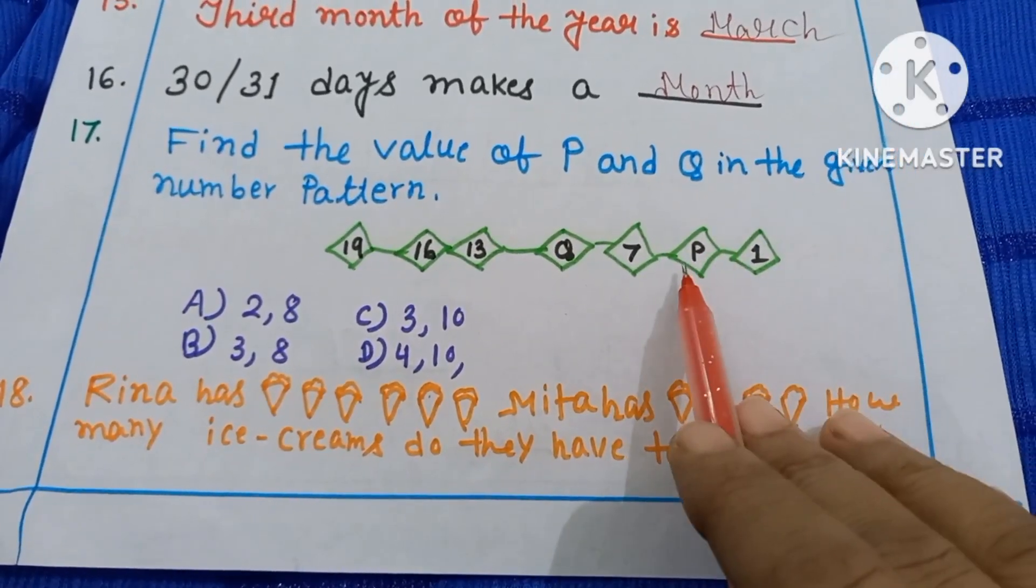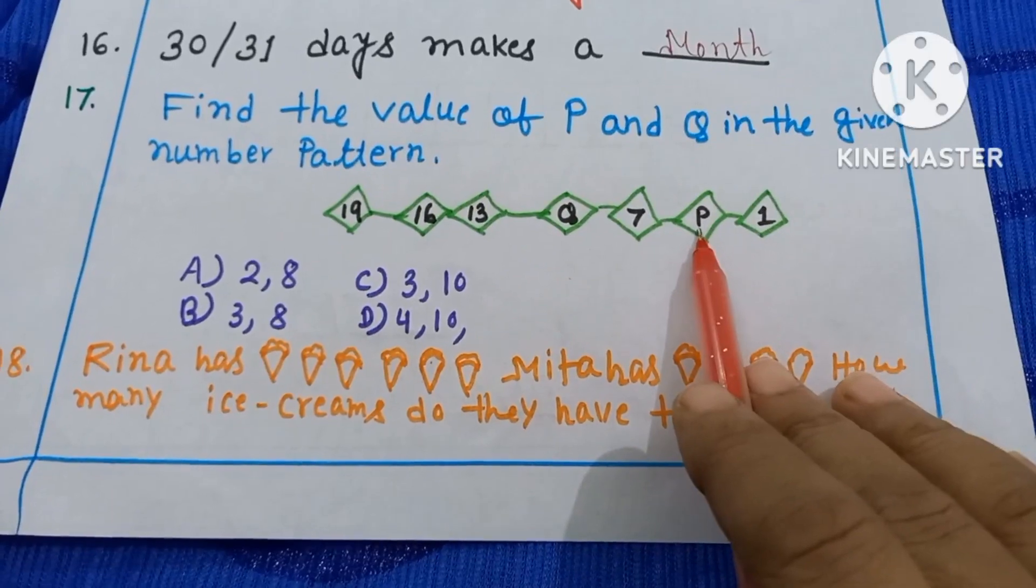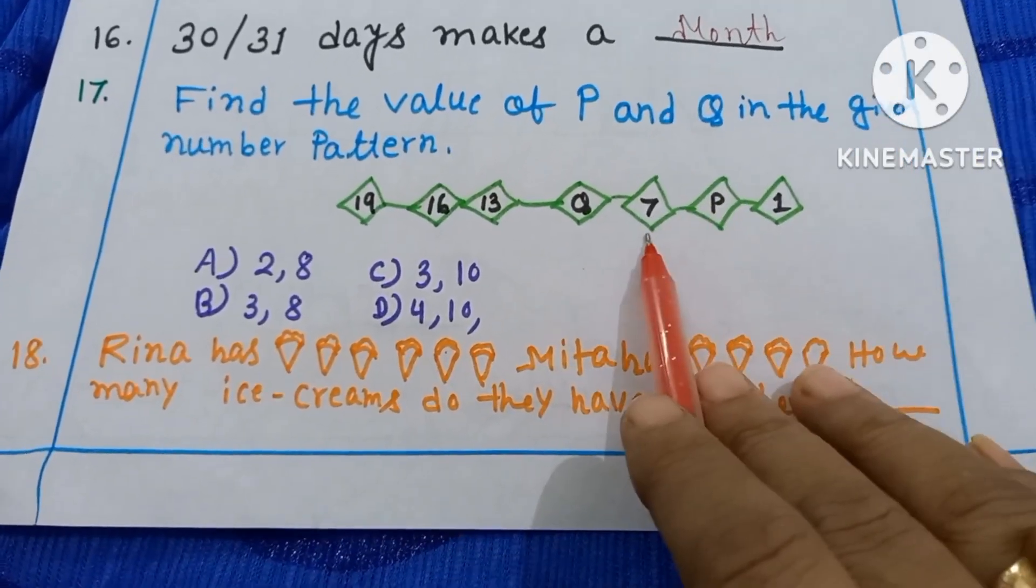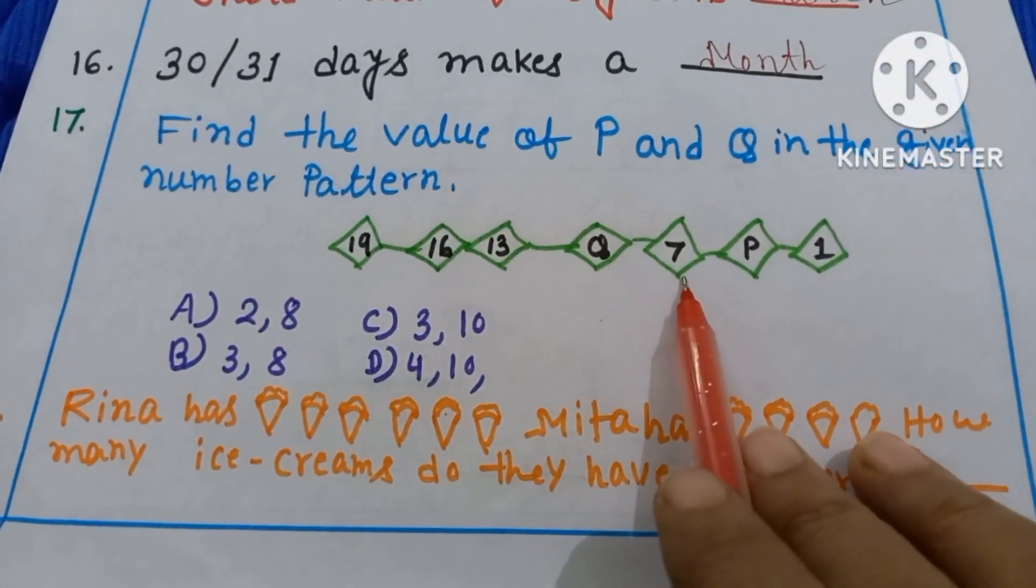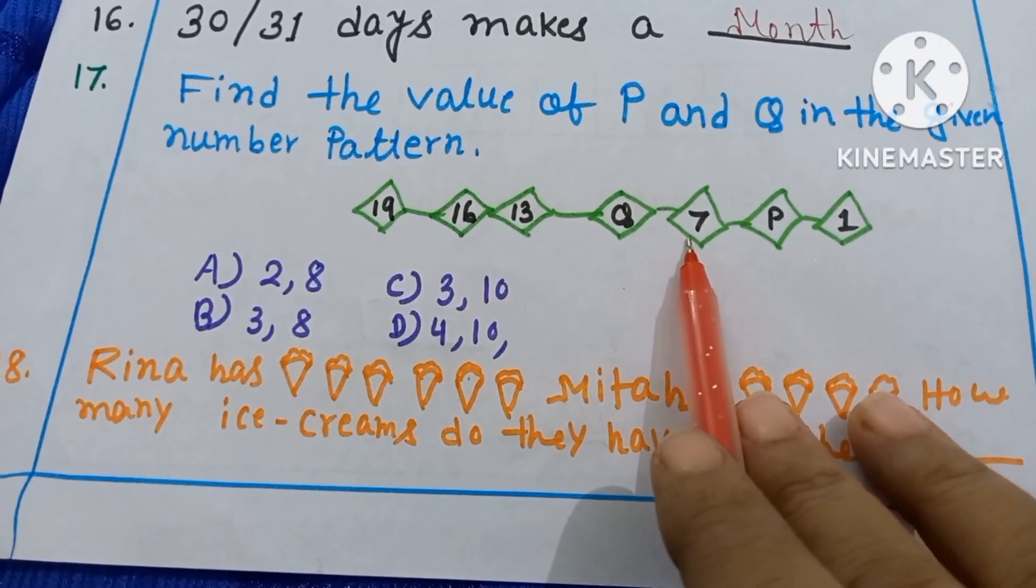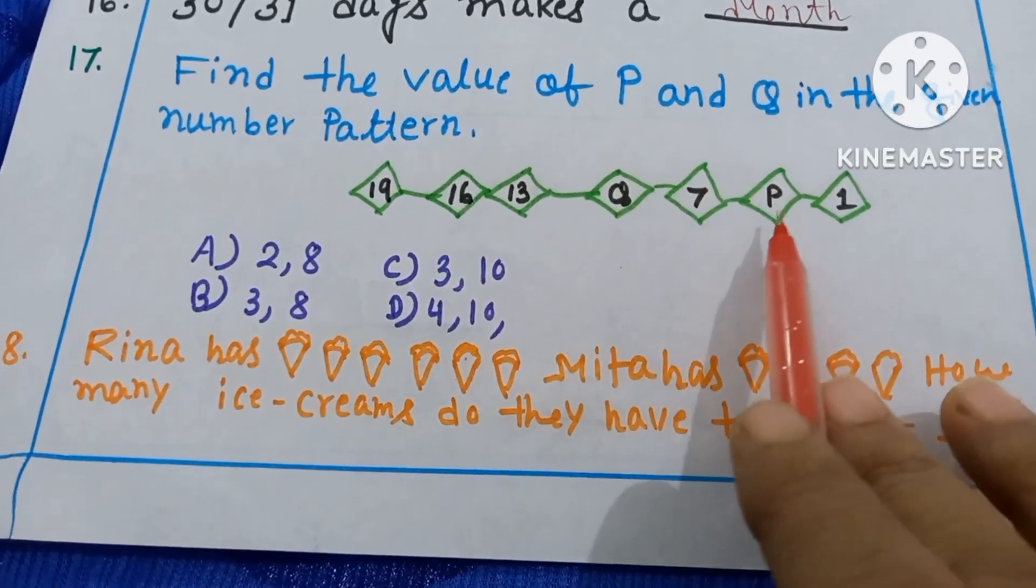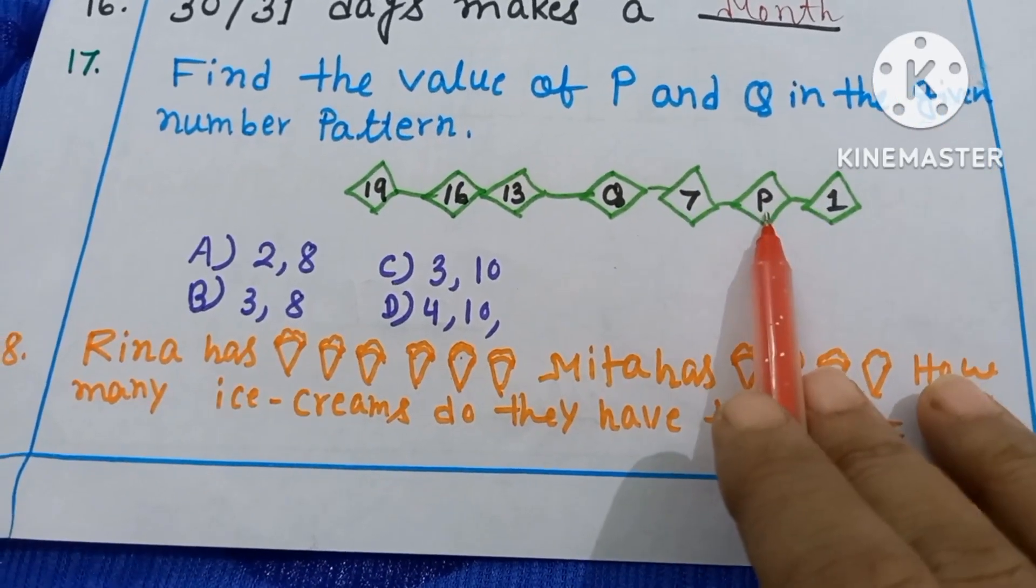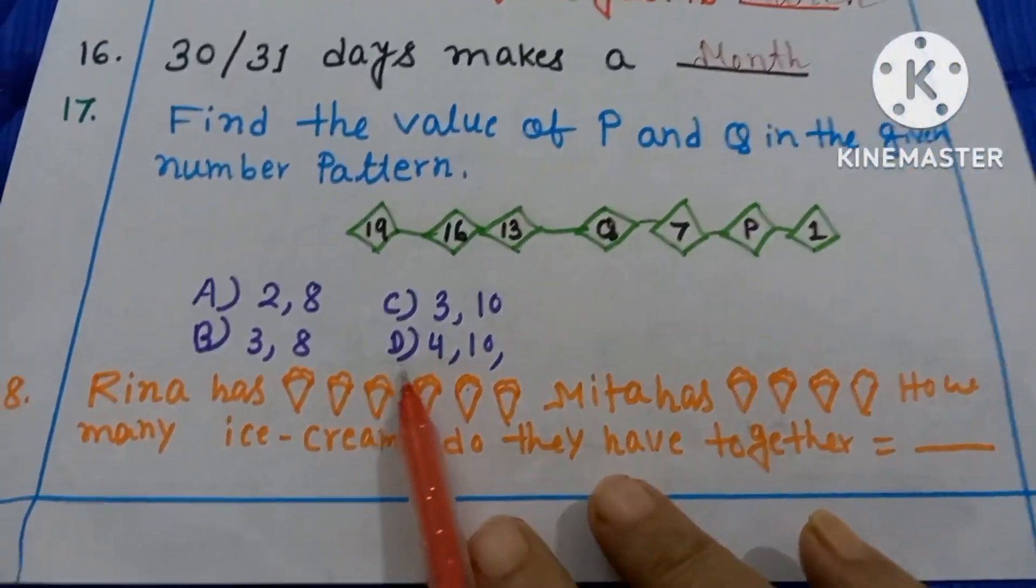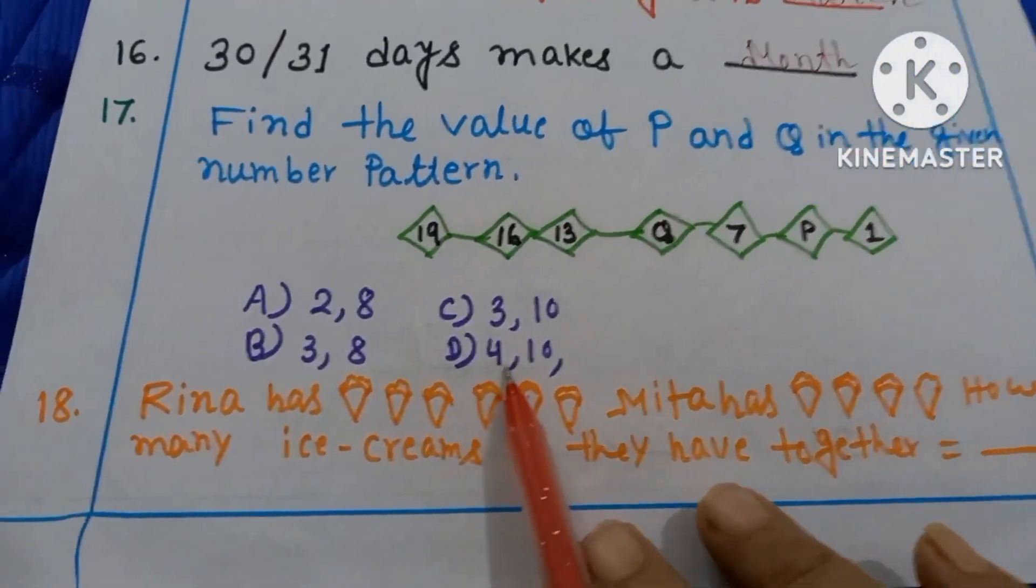So 1 plus 3 equals 4. So here 4, 1 then 4. 4 plus 3 equals 7, already I have written 7. Here Q, that means 7 plus 3 is 10. So the answer will be 4 and 10. So option D is the correct answer.